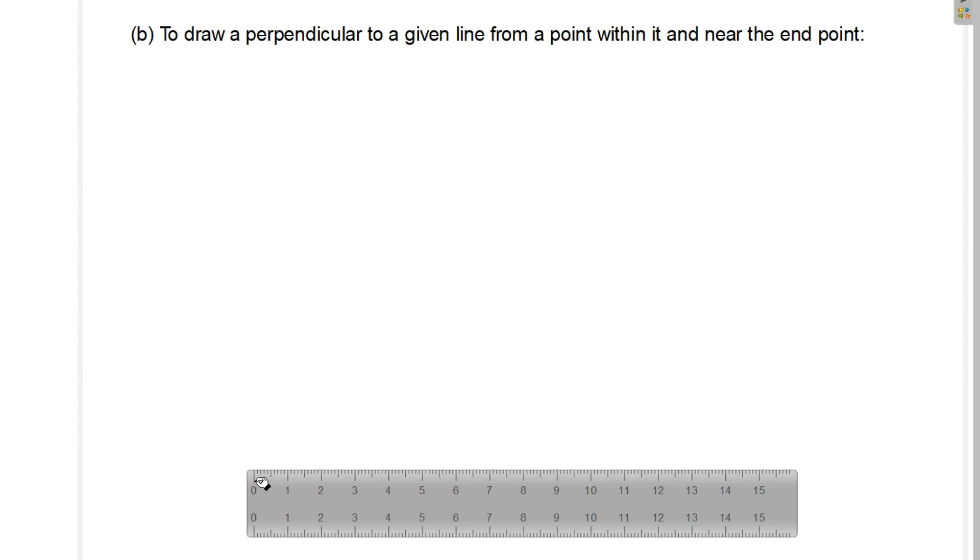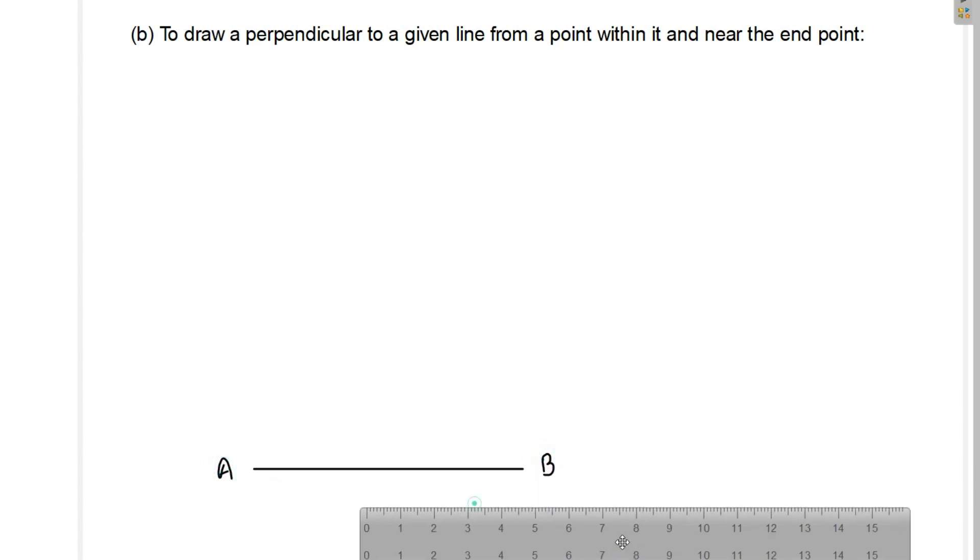So this is a given line of having given length that we will consider this is a line A, B. And here we have given there is one point, a point within it and which is near to the end point. So here this is point B is the end point and whatever the given point is there that is near to this point B. So now we will mark that point.